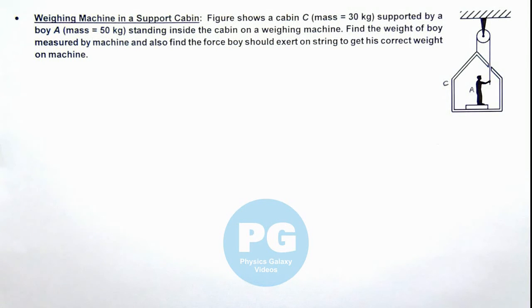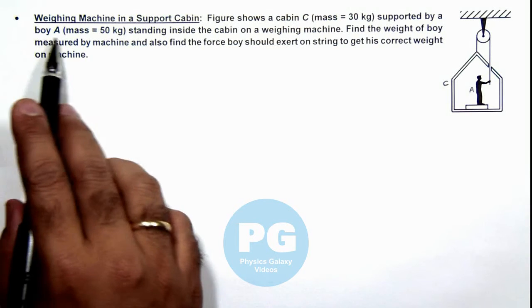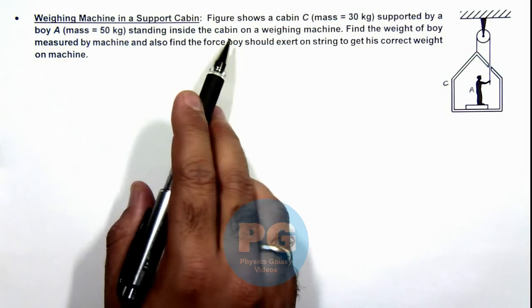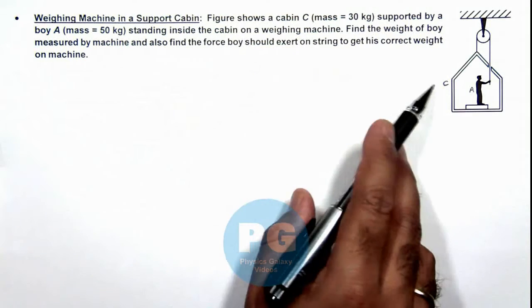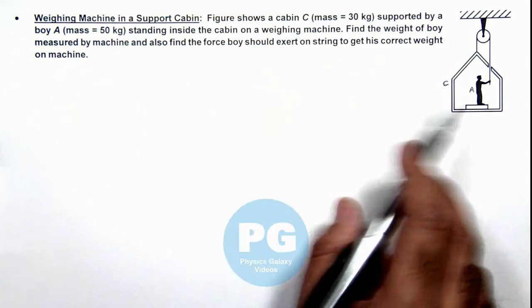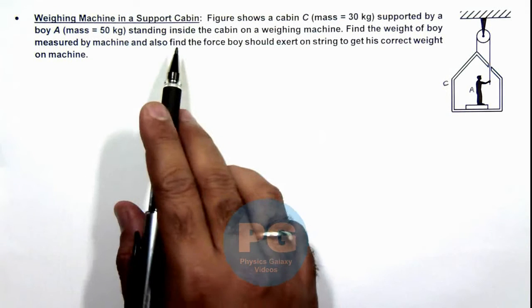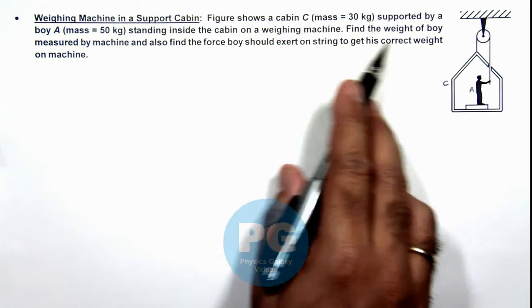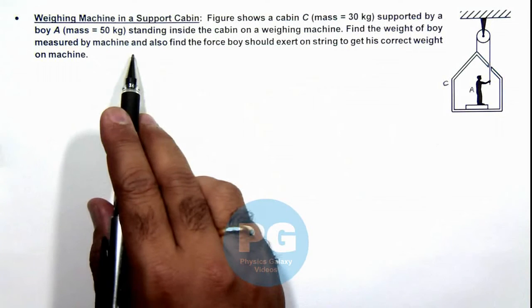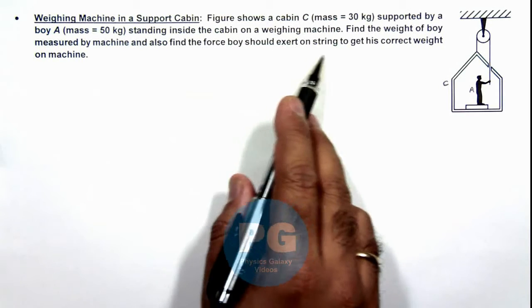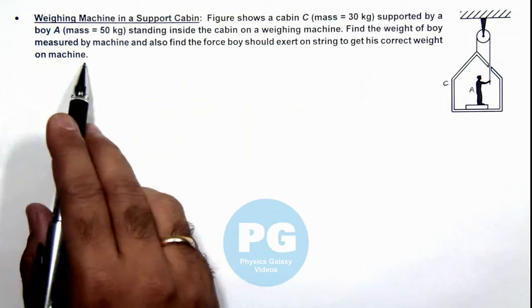This illustration is analyzing a weighing machine in a support cabin. The figure shows a cabin C of mass 30 kg supported by a boy A of mass 50 kg standing inside the cabin on a weighing machine. We are required to find the weight of the boy measured by the machine and also find the force the boy should exert on the string to get its correct weight on the machine.